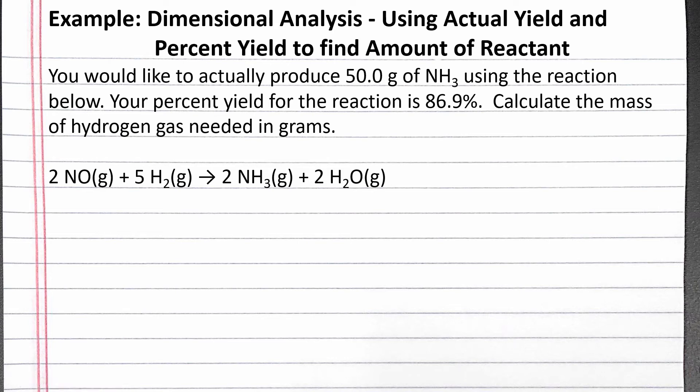In this example problem, we are given the actual and percent yields and are asked to find the amount of reactant needed. The problem reads: you would like to actually produce 50 grams of ammonia using the reaction below. Your percent yield for the reaction is 86.9%. Calculate the mass of hydrogen gas needed in grams.